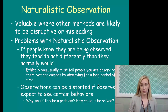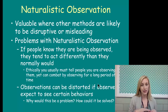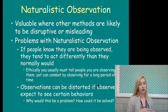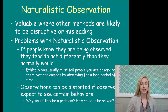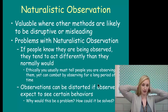The problems with naturalistic observation: if people know they are being observed, they tend to act differently. This is called the Hawthorne effect. Ethically, you usually must tell people you are observing them, but you can combat this by observing for a long period of time — they eventually get used to you and start acting as if you aren't there.